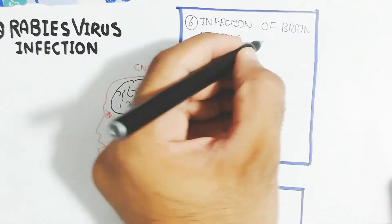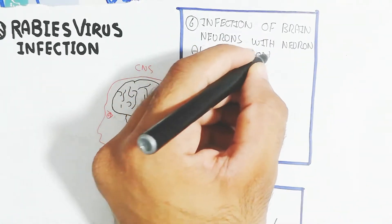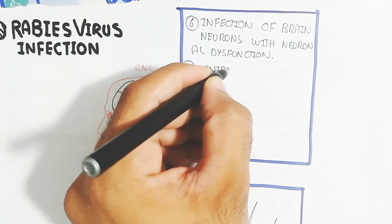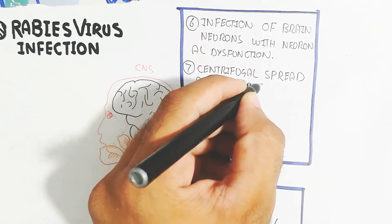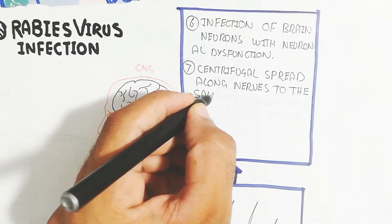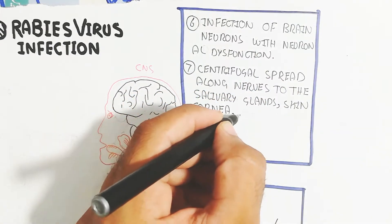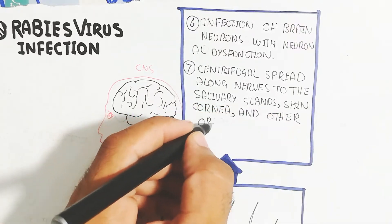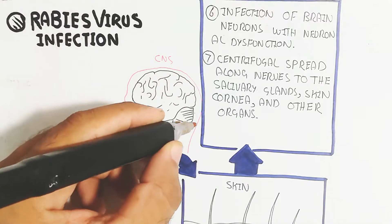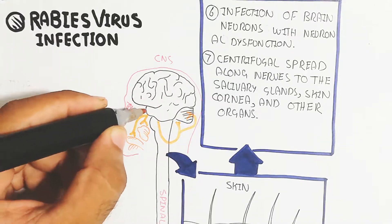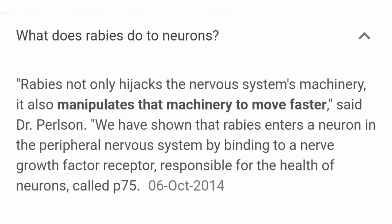Step six is the infection of brain neurons with neuronal dysfunction. Step seven is the centrifugal spread along nerves to the salivary gland, skin, cornea, and other organs. The brain will transmit signals and inhibitory neurons will be damaged after rabies infection.